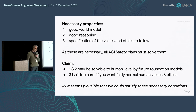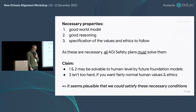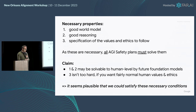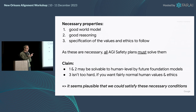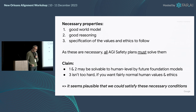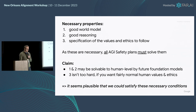One and two may be solvable to a human level by future foundation models — it's not a given, but it seems plausible that in a few years we may be able to get this to competent human level. And I think three isn't too hard if you want fairly normal human values and ethics, because you're basically pointing to a mode within the distribution of the world model. So it seems plausible that we could satisfy these necessary conditions.